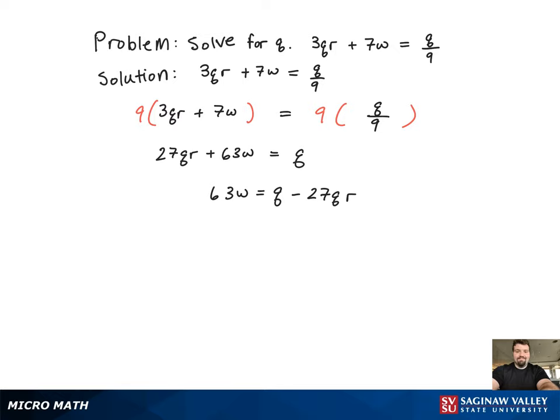Now that the Q's are on one side of the equation, since they're not like terms, we can't just combine the Q and the 27QR, so we're going to factor out the Q.